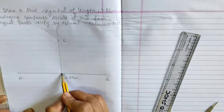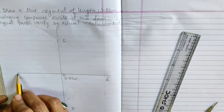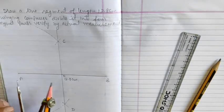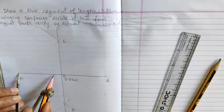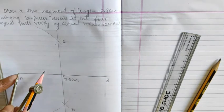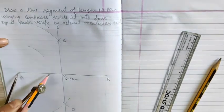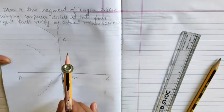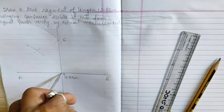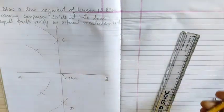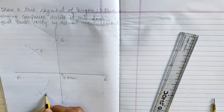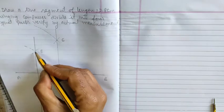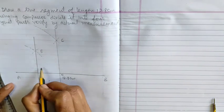You have to bisect A-O. So open the compass more than half of A-O. Put the tip of the compass at point A and draw 2 arcs on both sides of A-O. Now again put the tip of the compass at point O and draw another 2 arcs which cut the previous arcs at points E and F. Join E and F.